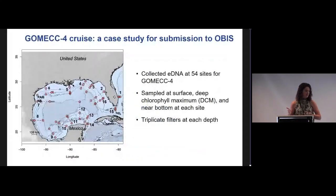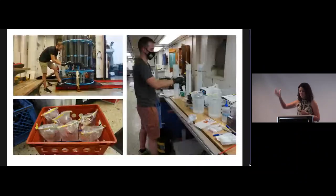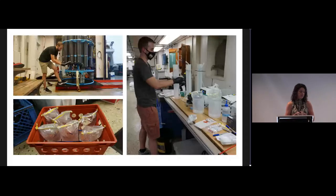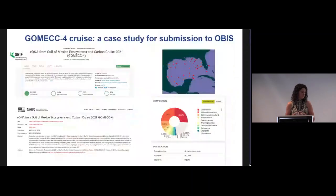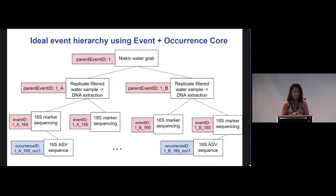We have a cruise that went out in 2021 in the Gulf of Mexico. This had 484 samples across 54 sites. These are water samples taken from a Niskin bottle and then split up into three replicate water samples, filtered on Sterivex filters. Each water sample had 16S or 18S sequencing done on it. This data is publicly available on GBIF and OBIS — huge shout out to Steve Frommel with GBIF and OBIS USA for helping get that through.